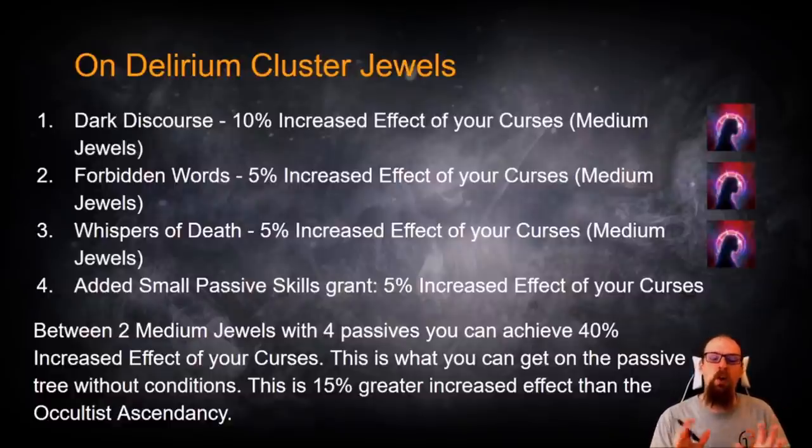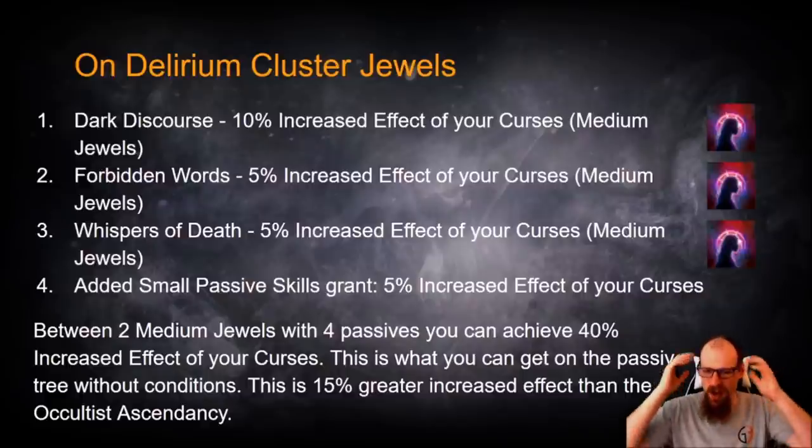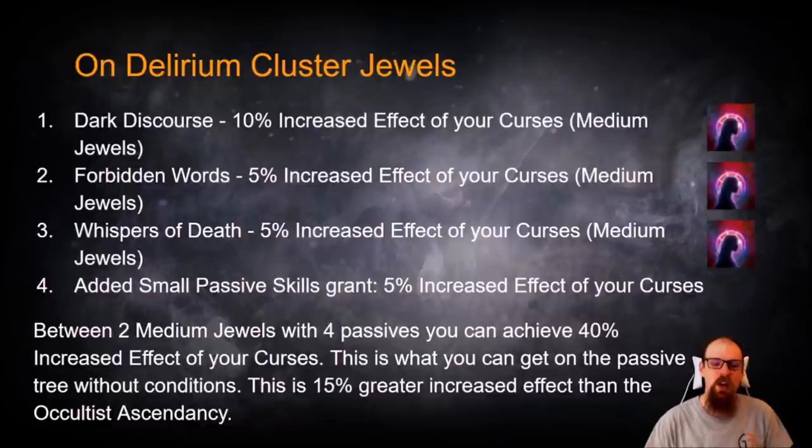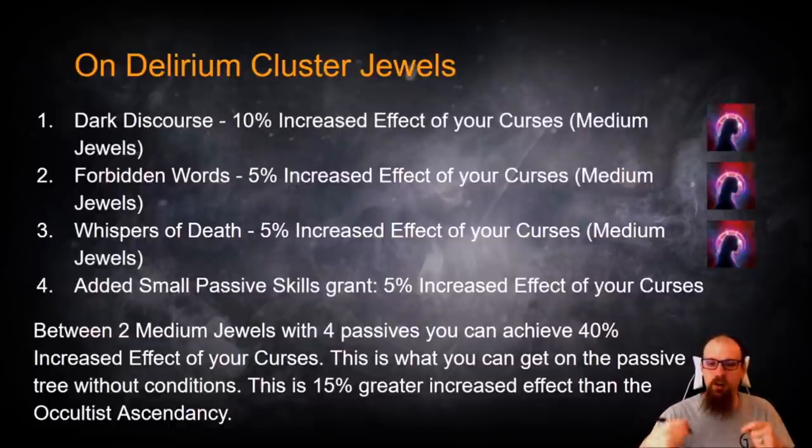Let me put it in no uncertain terms for those of you that are just scratching your head and wondering, maybe this is too many numbers thrown at you all at the same time. What we can get on Delirium Cluster Jewels now, if we stack enough of them, is actually going to end up being more increased effect of curses than what we previously had on our Ascendancy and on the total passive tree combined.